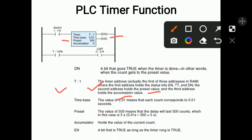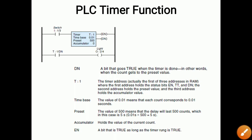Next is time base. The time base value here is 0.01, meaning each count corresponds to 0.01 seconds. The preset value is 500, meaning the delay will last 500 counts, which in this case is 5 seconds — 0.01 multiplied by 500 equals 5 seconds. So the total time delay here is 5 seconds.